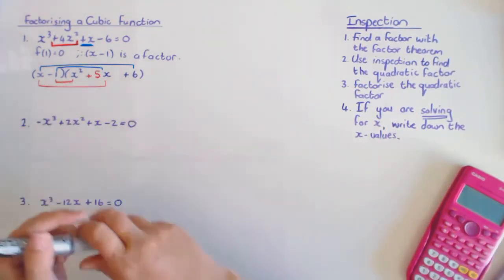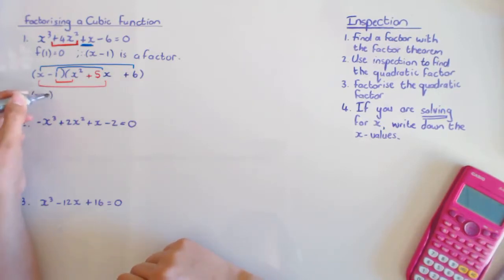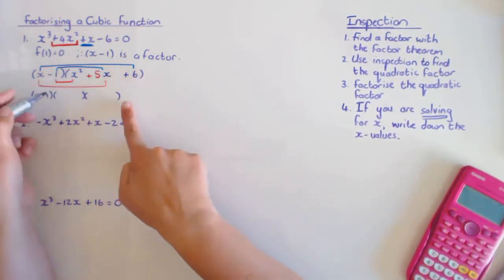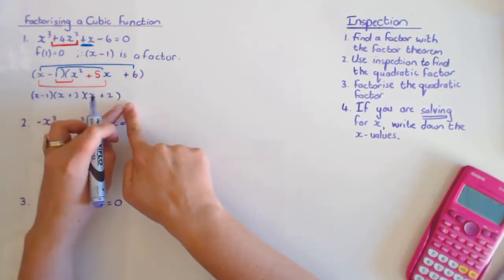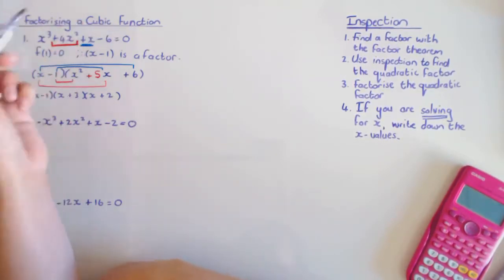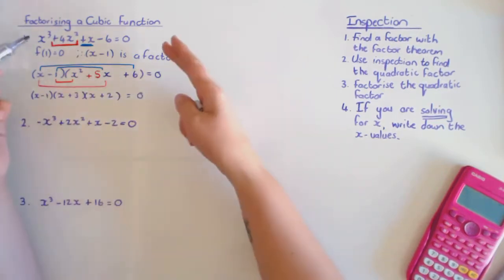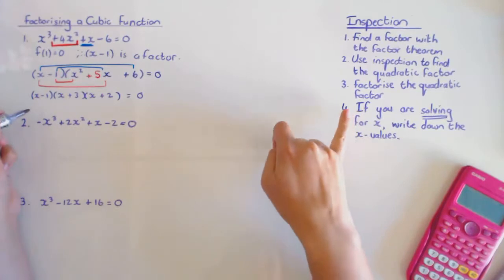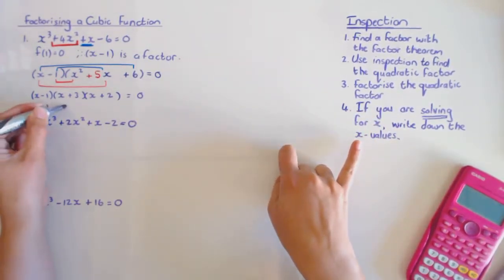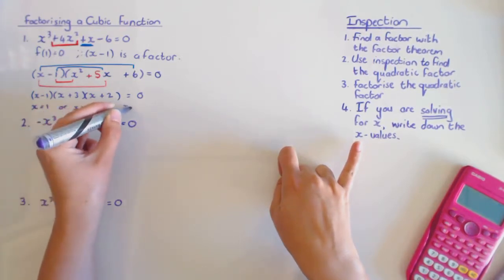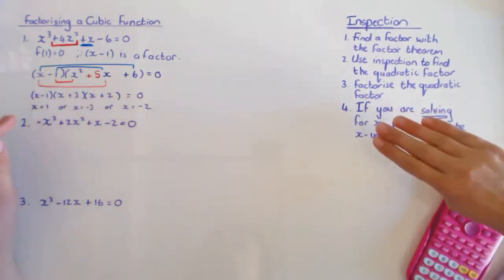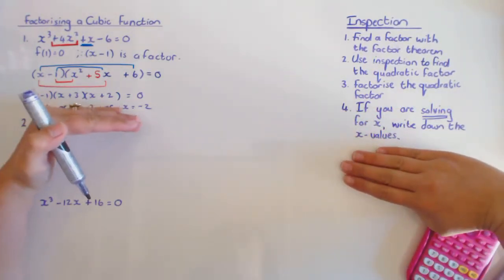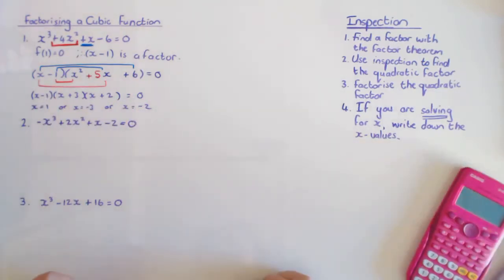By grade 12 you should be comfortable factorizing a quadratic expression. Those are your second two brackets. If you have the expression equal to zero and are solving for x, write down x equals negative three or x equals negative two. If you're just factorizing, you can stop at the factored form. If you're solving for x with it equal to zero, then write down those answers.